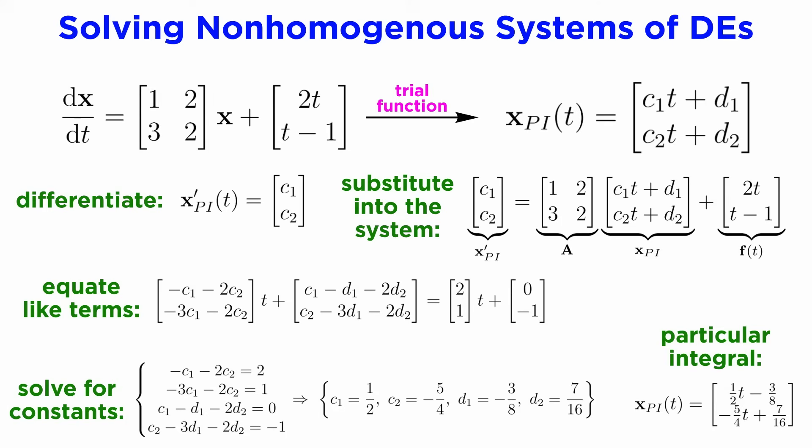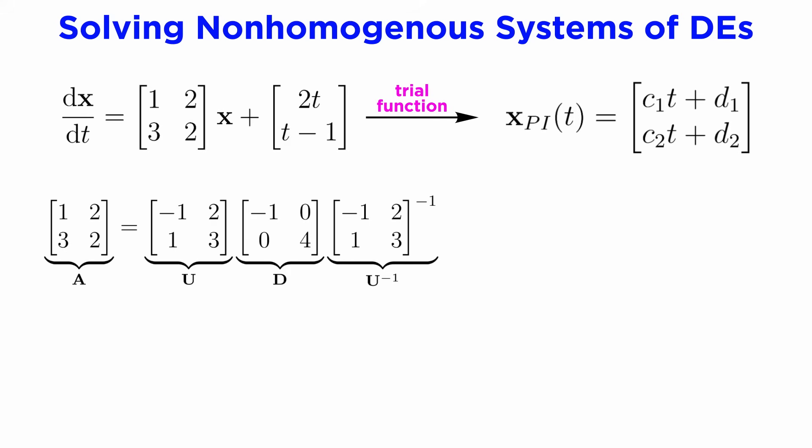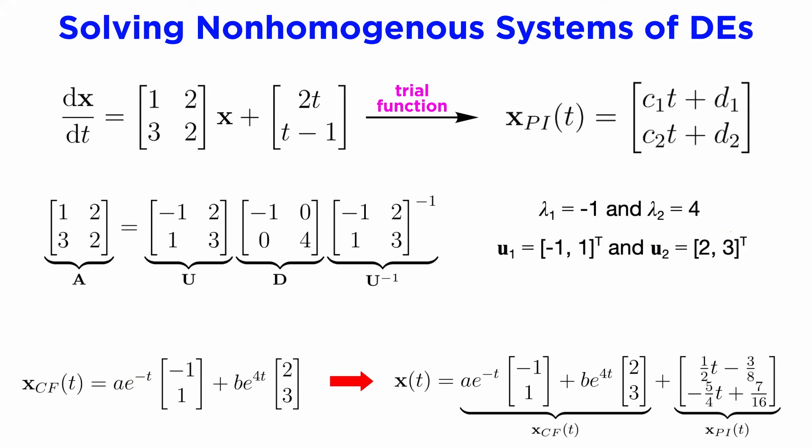Now remember that this particular integral must be combined with the complementary function in order to get the general solution. So in order to find the complementary function, we would find the eigenvalues and eigenvectors of A, which will be as follows. Since both eigenvalues are real, we can use the first complementary solution case, which gives us this. And finally, we combine that with the particular integral we found just a moment ago, which gives us this for our general solution.